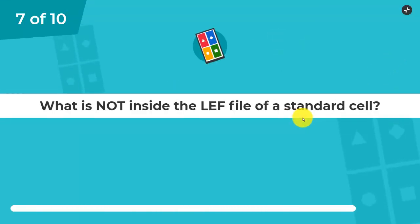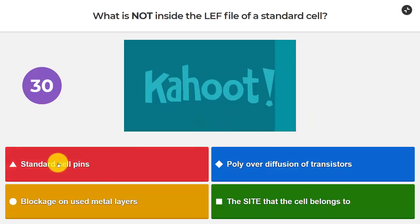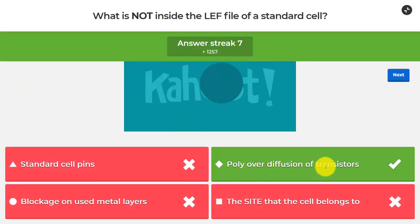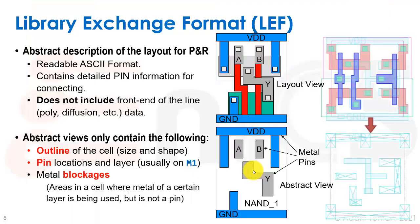What is not inside the LEF of a standard cell? Standard cell pins, poly over diffusion of transistors, blockage on used metal layers, the site that the cell belongs to. And the basic idea of the LEF is it abstracts away, we don't want to see the transistors. So the correct answer here is the poly over diffusion of transistors does not exist inside the LEF of a file, the LEF of a standard cell.